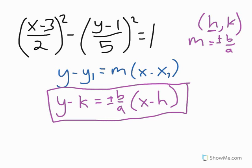Now, with the hyperbola we are given right here, my center point is at 3 comma 1, and my a value is 2, and b value is 5.